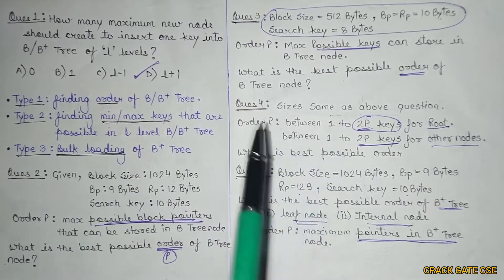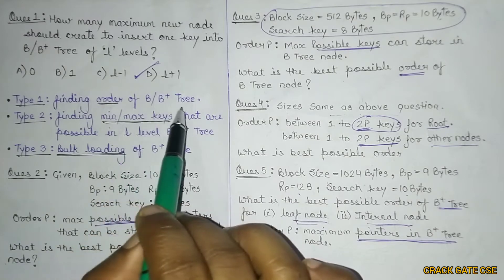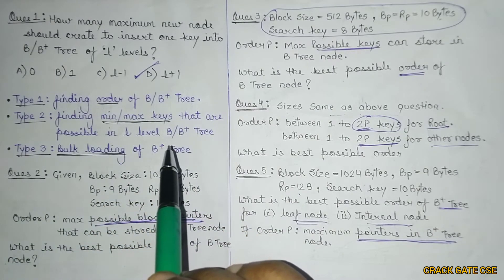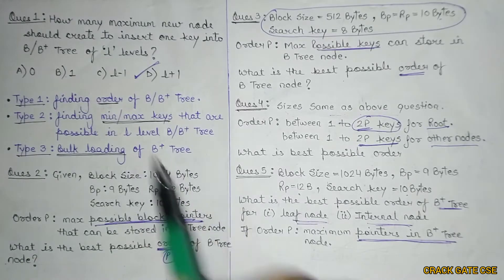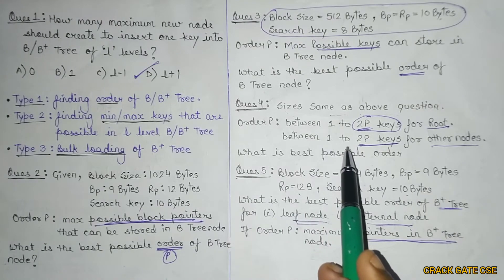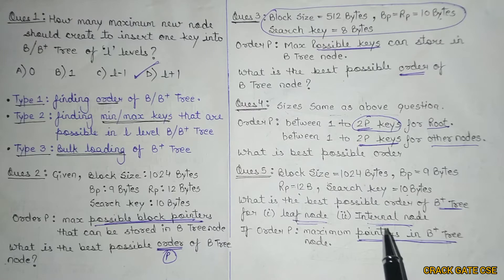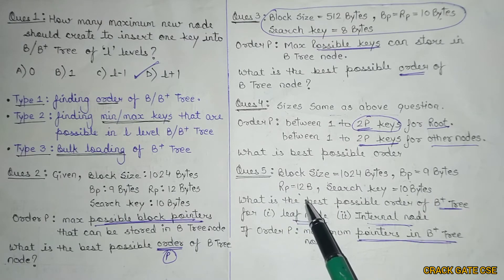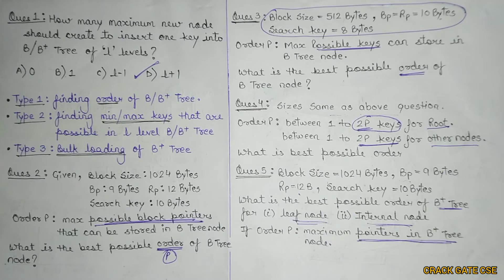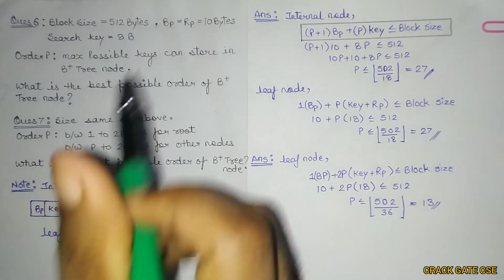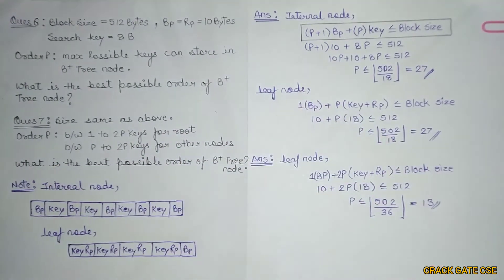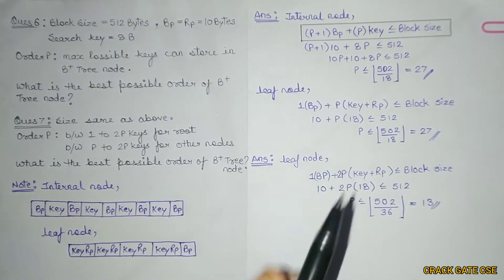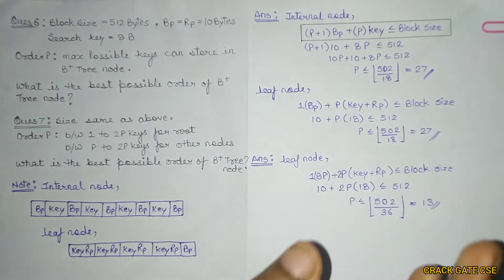Hello friends, welcome to PRAGate CSE. In this series on databases, we have discussed questions in the previous video. These are type 1 questions of B and B+ trees — expected questions that can be asked in any competitive exam for computer science engineering. If you have not subscribed the channel, please subscribe and press the bell icon to get updates whenever I upload a new video.